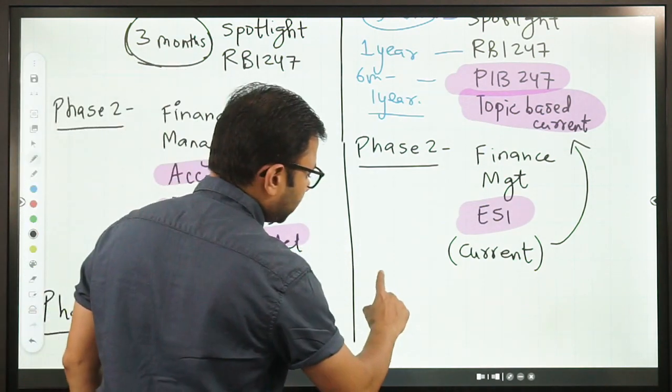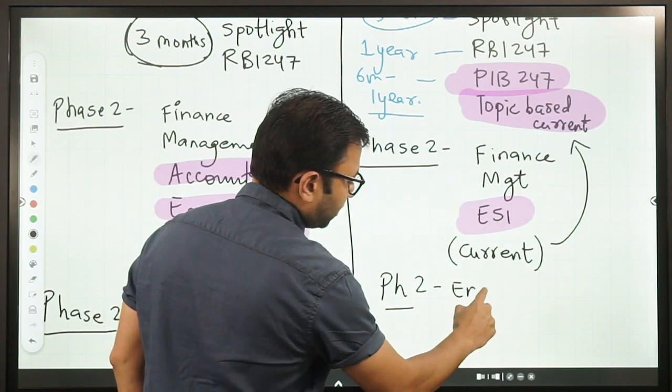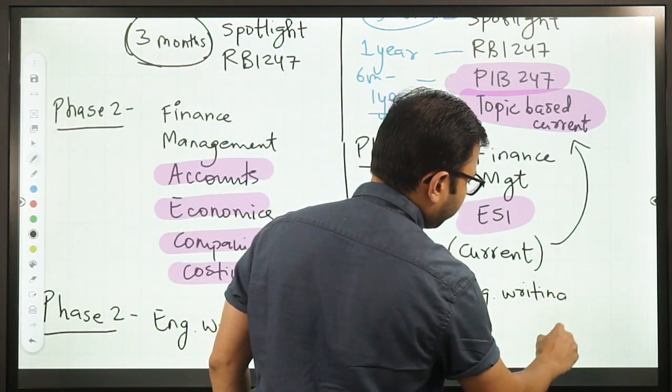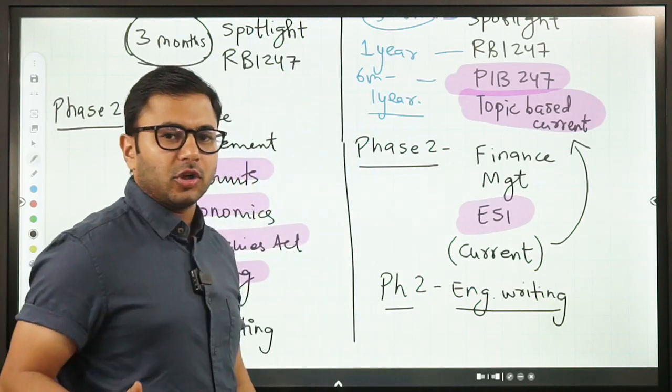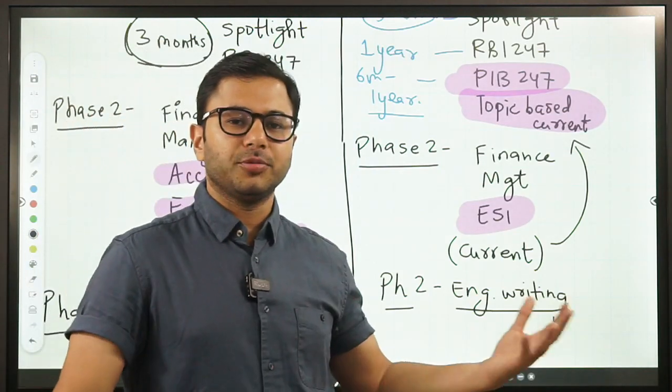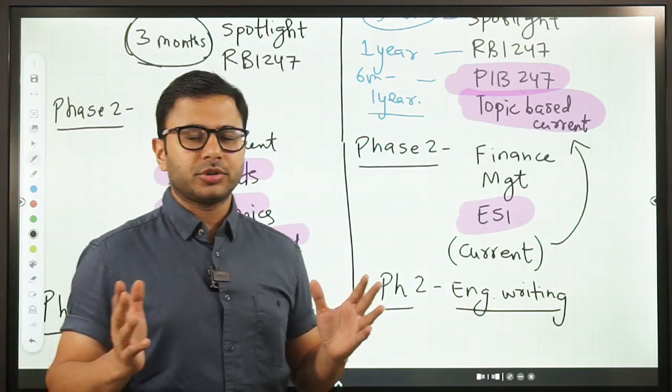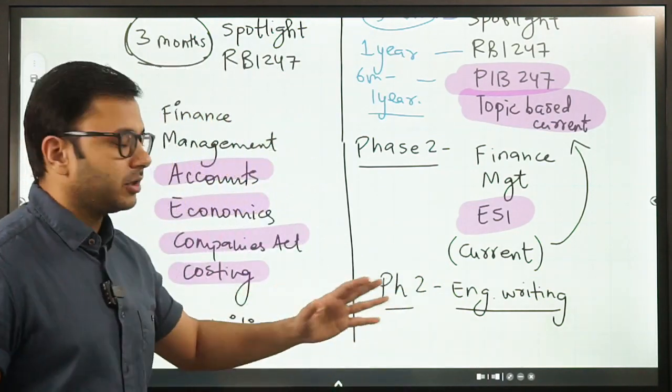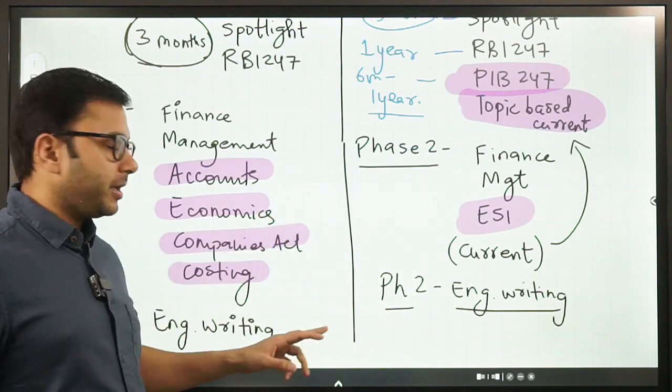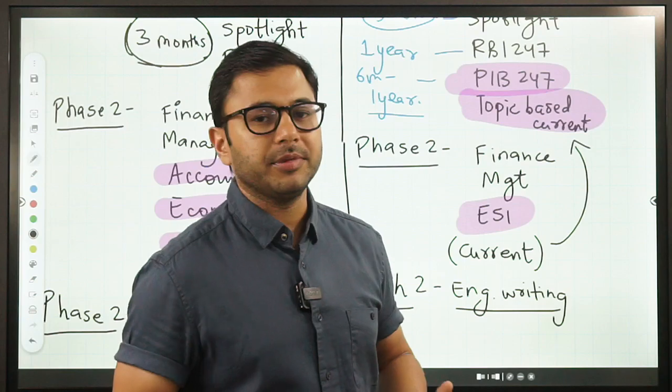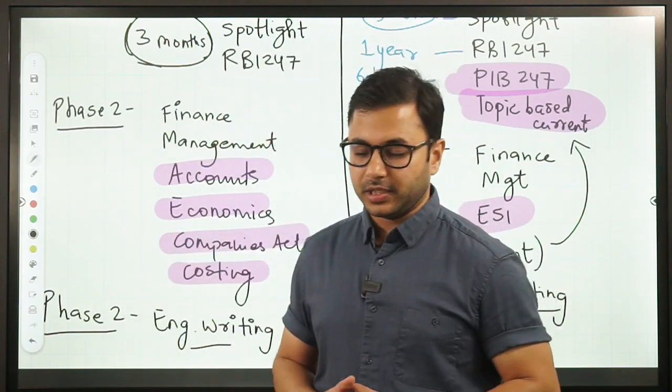There is another thing that comes in RBI phase two, that is English writing, just like SEBI, exactly the same. It can be a little bit of a pattern change. Instead of an essay, you might have a letter or you might have a reading comprehension. You might have more questions. But almost the same pattern is followed in both these exams. So if you are preparing for SEBI, if you get a chance to write phase two, you will automatically be preparing for RBI as well. You will get a benefit.